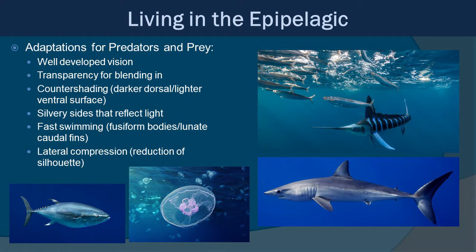There are many more adaptations beyond buoyancy for the epipelagic. A lot of species have well-developed vision because they're in a very sunlit zone, and vision is a clue to where your predators and prey are. Transparency can also be a good adaptation, even into the deeper layers, because it helps you blend in. There's also countershading — you can see this in the Mako shark — with a darker dorsal section and a lighter ventral section. Looking from above you blend in, and looking from below upward it helps as well.